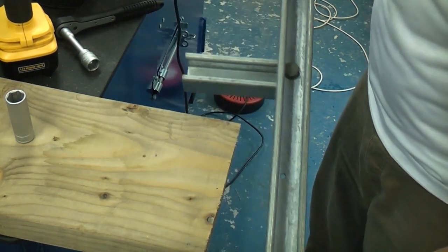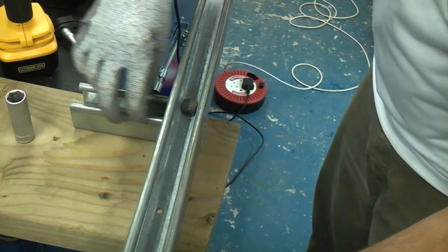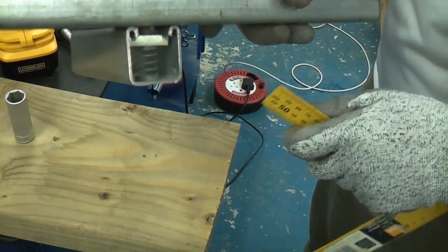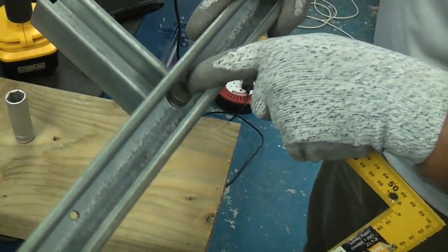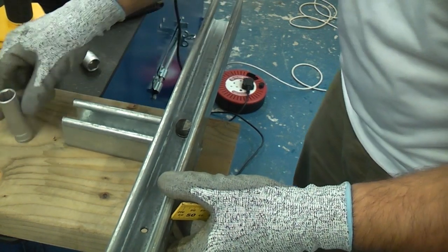That's why I have made this using two offcuts of unistrut. We have a piece going in that direction, that piece is set at 90 degrees, and then going through there we have a back nut and a bolt all the way through. So it's very simple to make, it only takes a couple of minutes.